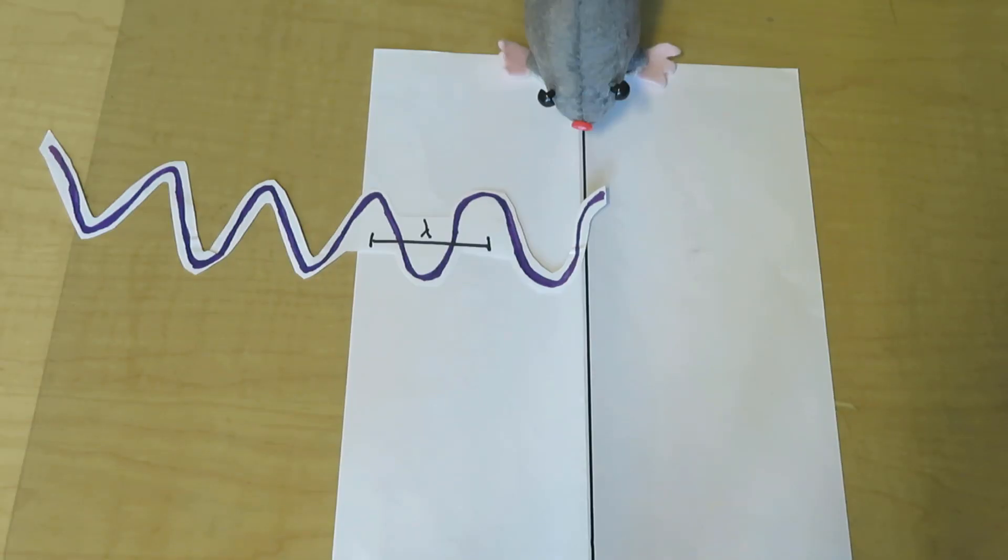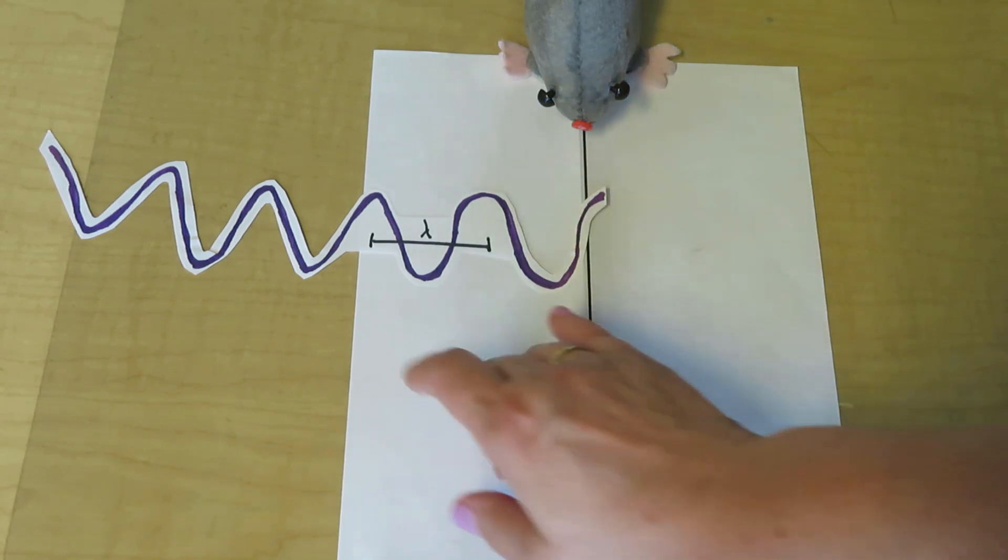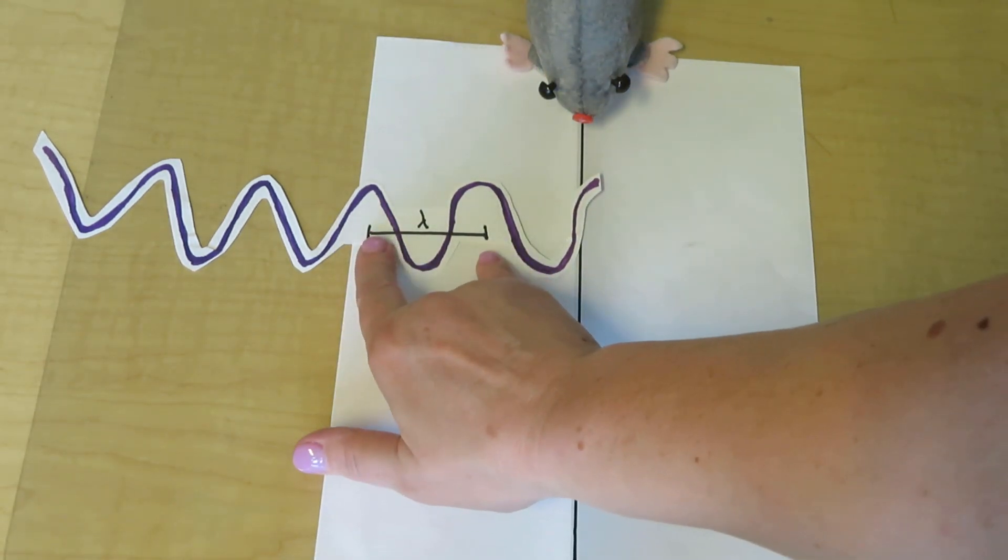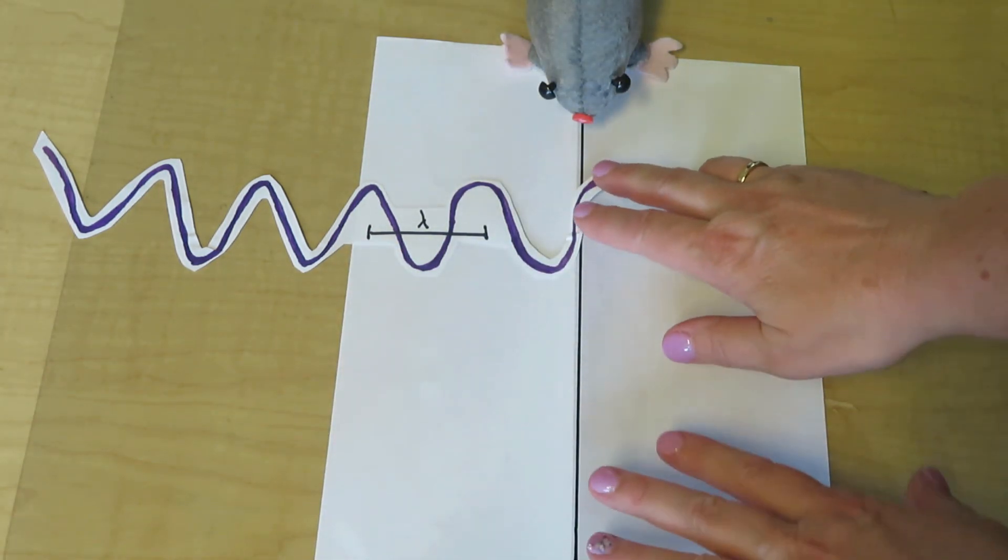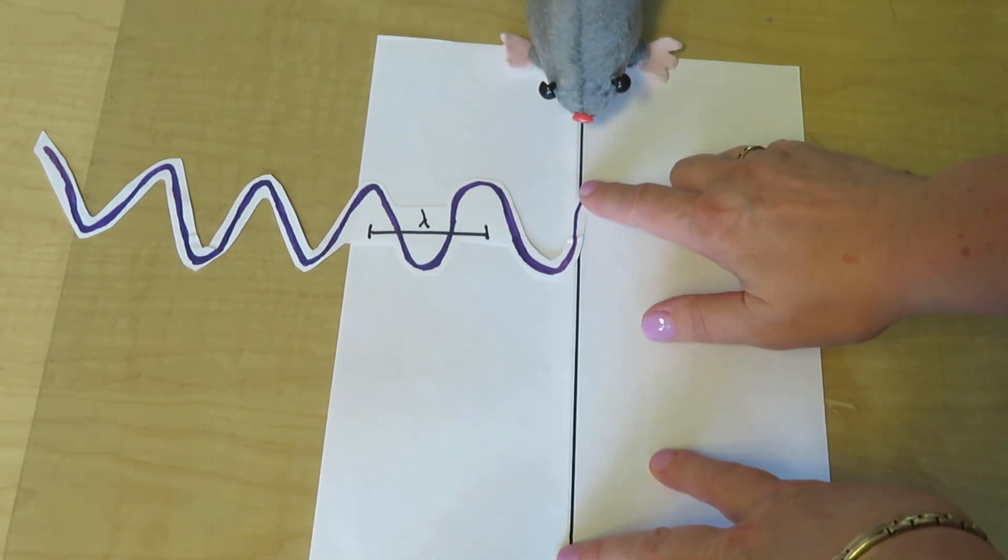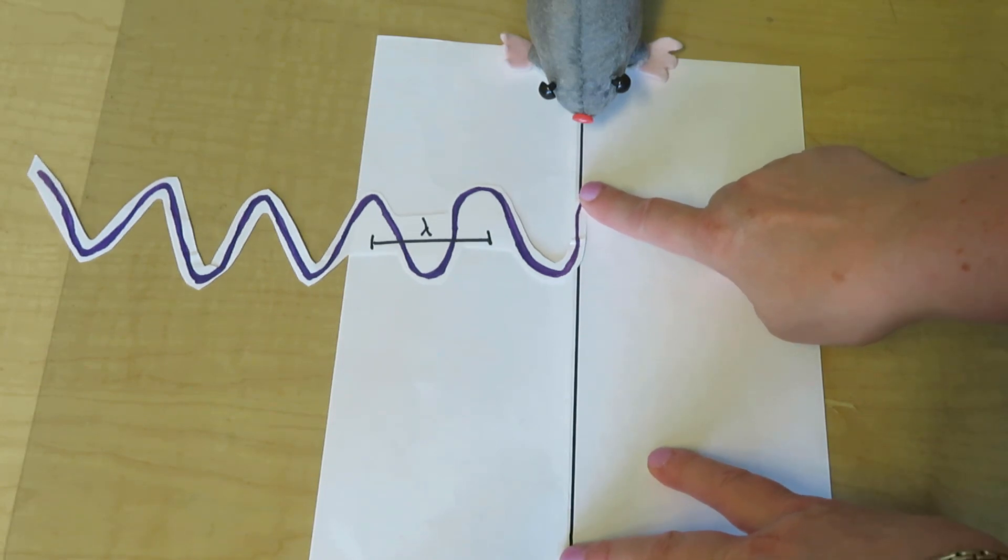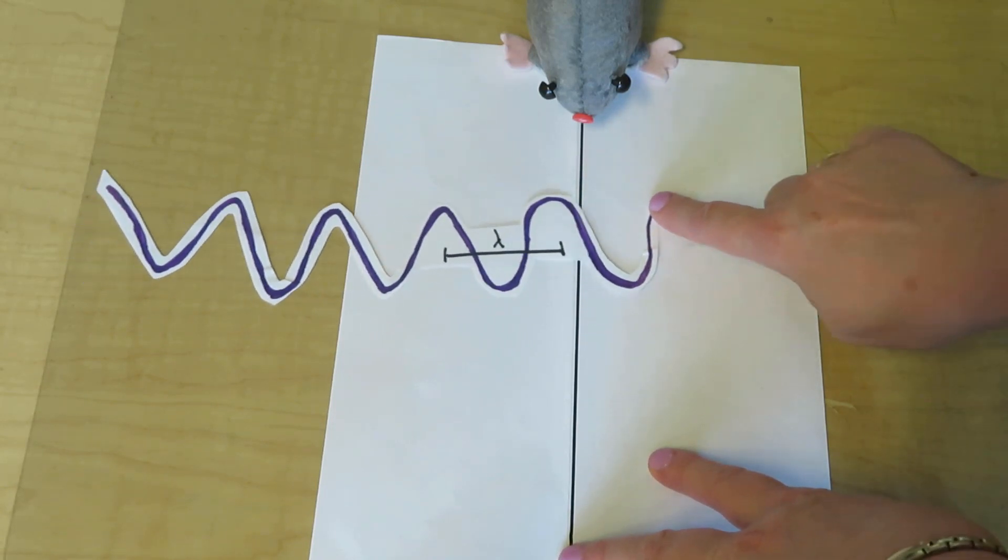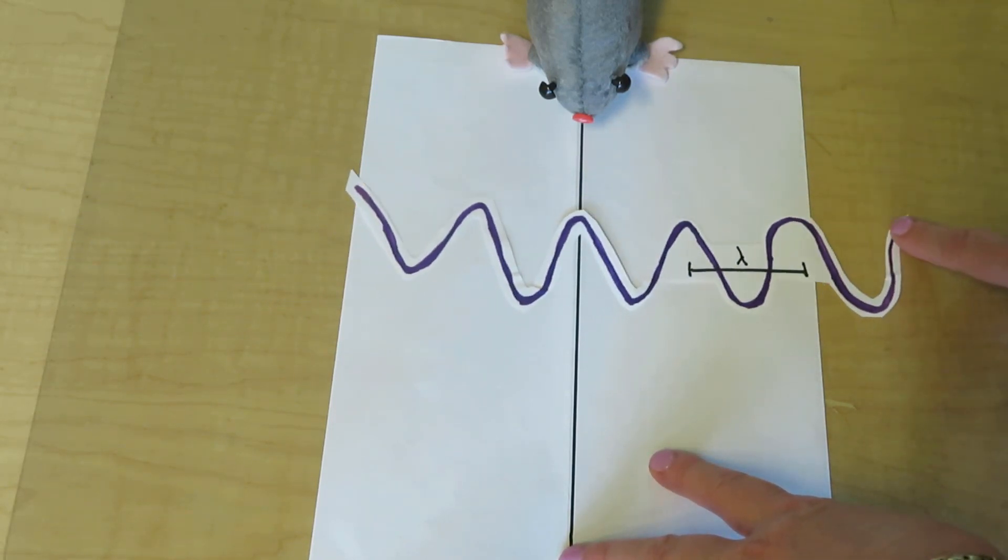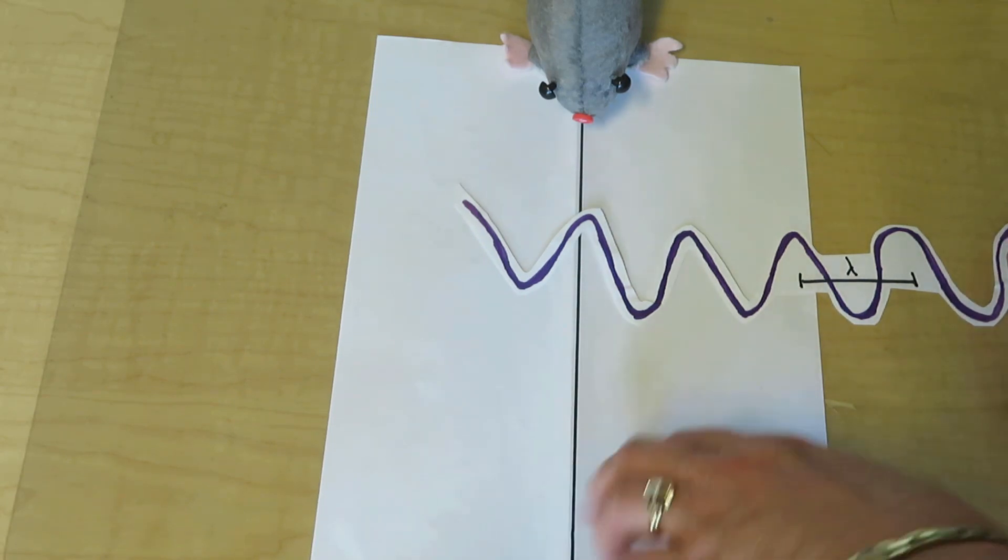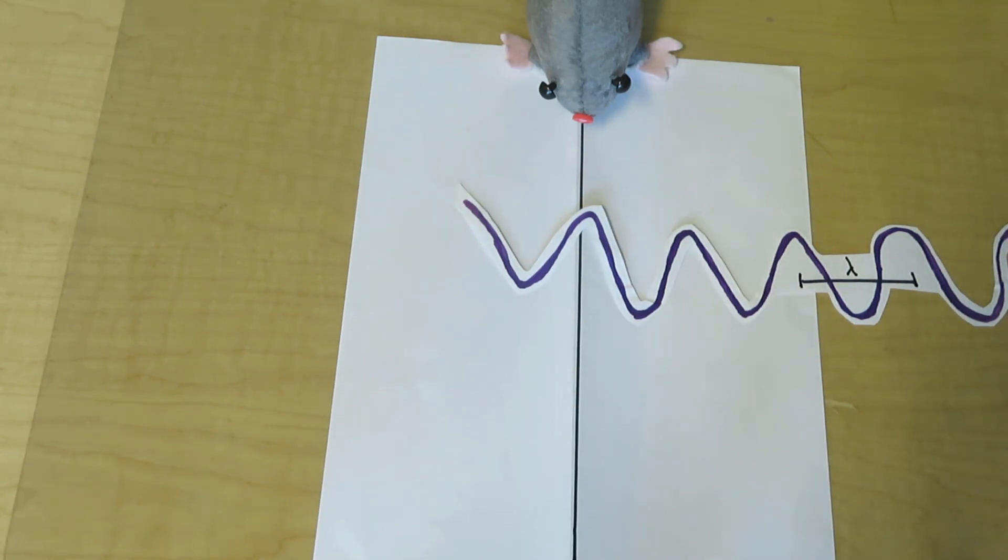Now let's try the same example in slow motion, but this time with purple light, which has a smaller wavelength or difference from peak to peak. So once again, I shall beep every time the peak of the wave passes the plane. Beep. Beep. Beep. Beep. Beep. Now which time did I beep faster, with the purple light or the red light? Well, the purple light, of course.